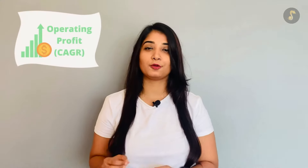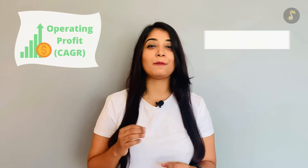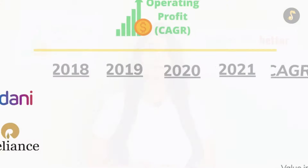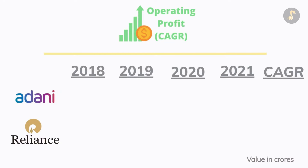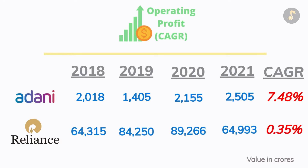Our second parameter is operating profit growth. Operating profit growth jis ka zyadha hota hai woh company better hoti hai, so again higher the better. Adani Enterprises ka pichle 3 saal ka operating profit growth raha hai 7.48%, vahe Reliance ka operating profit growth raha hai 0.35%, making Adani Enterprises a better pick under this aspect.